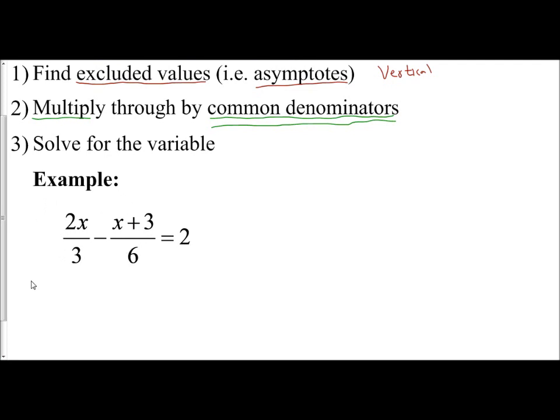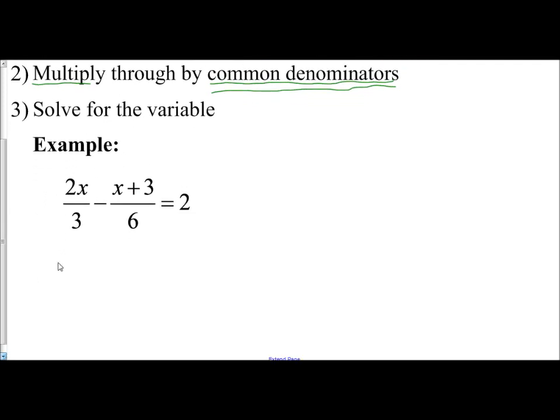And so I have this rational function. 2x over 3 minus x plus 3 over 6 equals 2. So there's my rational equation.